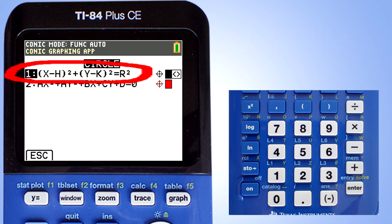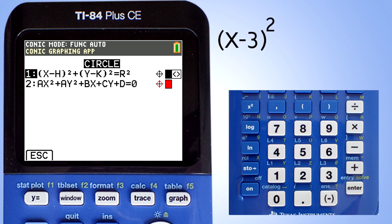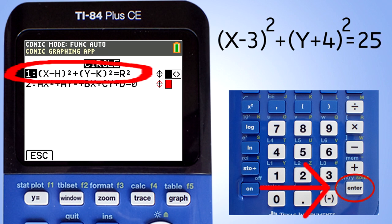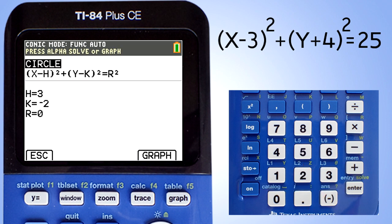In this video we will use the first equation and we will graph the following circle: (X-3)² + (Y+4)² = 25. On the calculator choose 1 and press Enter. This screen appears.